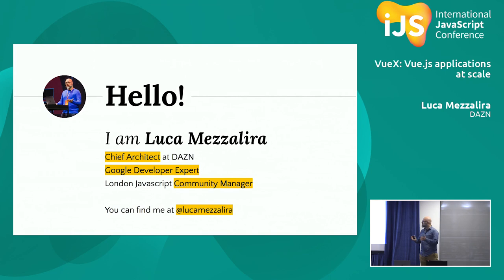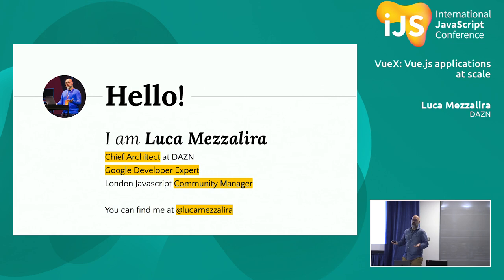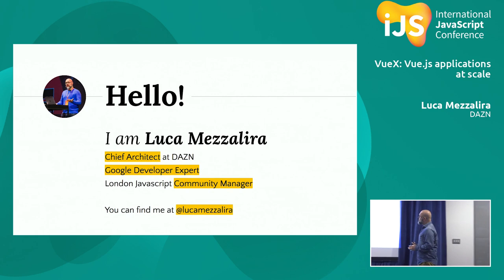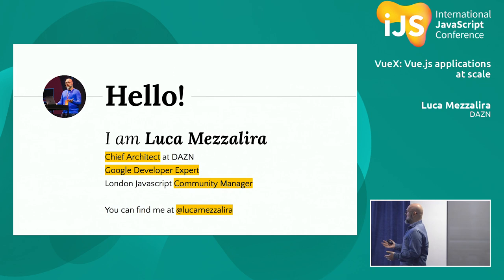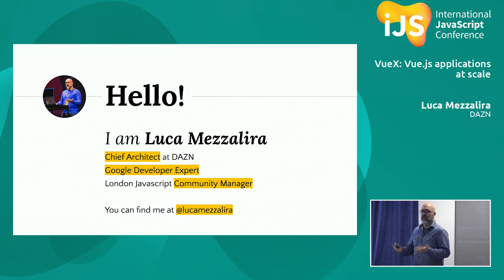My name is Luca. I'm a Chief Architect at The Zone. The Zone is a British company — the full name is Conqueror of the World. We have a broadcast platform for sport, similar to Netflix, but we broadcast sport, not movies — we have live content and video on demand. I'm a Google Developer Expert on Web Technologies, and I'm the Community Manager of the London JavaScript community. We organize events around London — it's almost three years that we've been doing that with decent success. If you're based in London and interested in JavaScript topics, check out meetup.com.